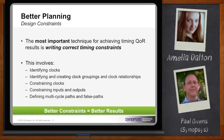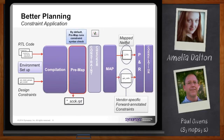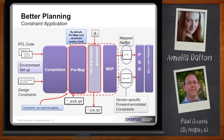Walk me through this constraint process. Looking at this diagram for the overall synthesis process: you start out with your RTL code, have your correct environment set up, and your input is your design constraints. The first thing we do is compile the design into a pre-mapped database where we can analyze your constraints and generate reports. Then we apply the constraints, map your design, and finally generate your output netlist and the forward-annotated constraints, which are sent to the place and route tool.